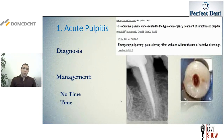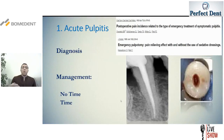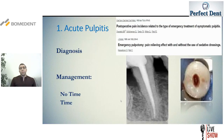After performing pulpotomy in the emergency visit, you have to prescribe anti-inflammatories for the patient to take for an average of two to three days to decrease postoperative inflammation and pain. The patient will then schedule another appointment to complete cleaning, shaping, and obturation.